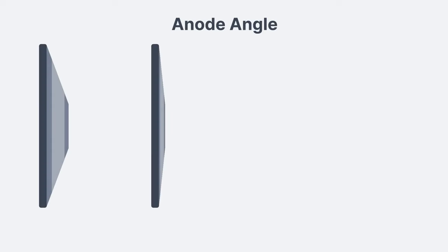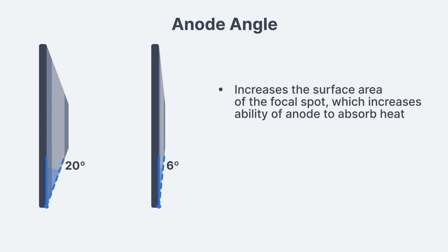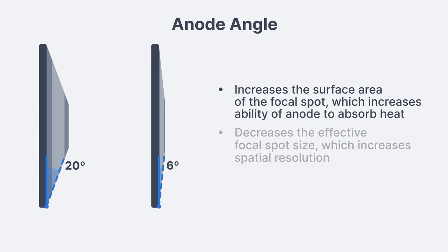Remember that the anode in general radiography is usually angled between 6 and 20 degrees. This is a good thing for two main reasons. First, the anode angle increases the surface area of the focal spot, which increases the ability of the anode to absorb heat. Additionally, the angle helps to decrease the effective focal spot size and therefore increases the spatial resolution of the radiograph.